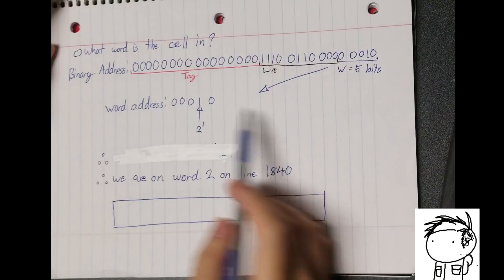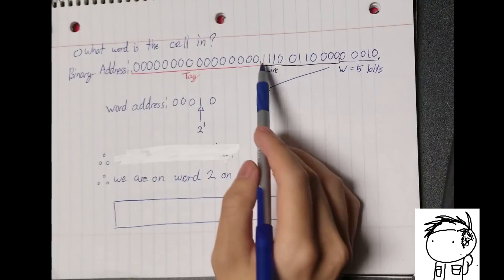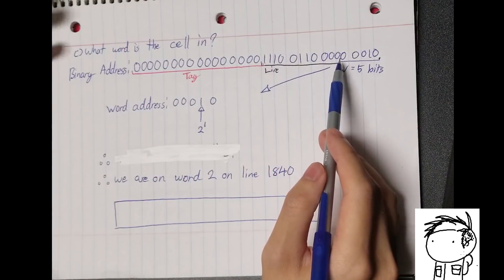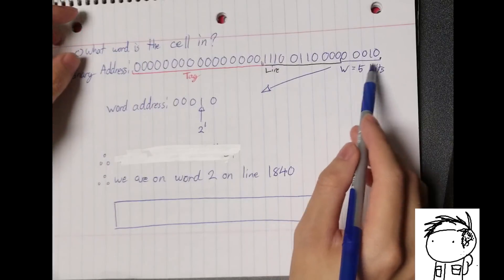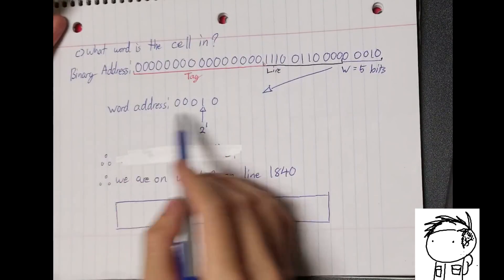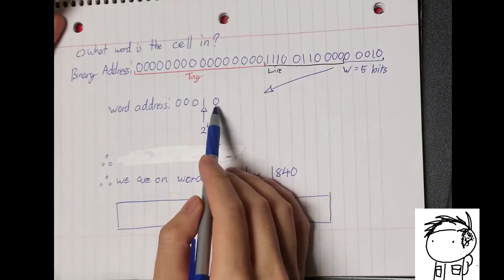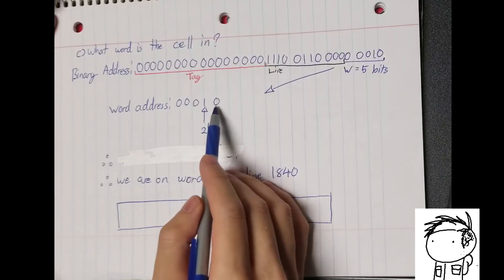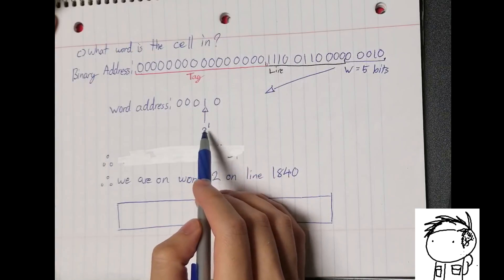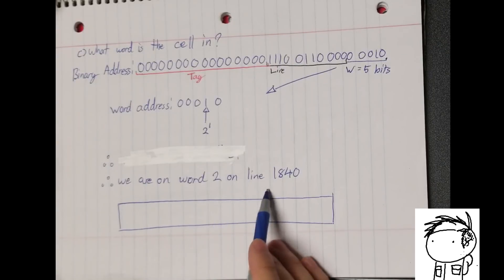So next thing we're going to do is we're going to get what word the cell is in. Much like getting the line from the previous question, we're now concerned with the word. So similarly, we take the binary from the words, and then we add up whatever where there's a corresponding 1. In this case, there's only a 1 where the 2 to the 1 is. So therefore, we are on word 2 of line 1,840.